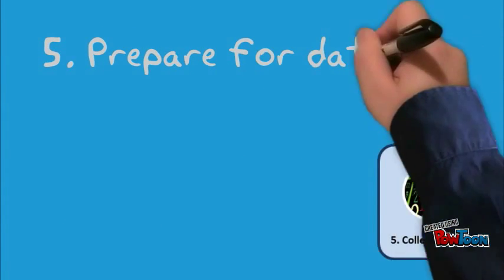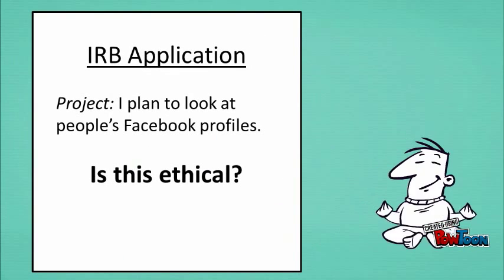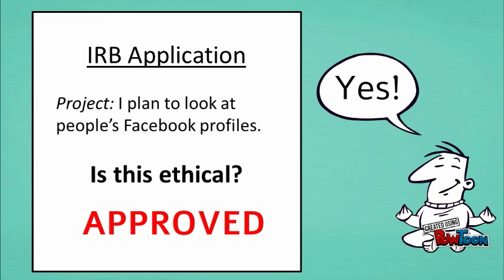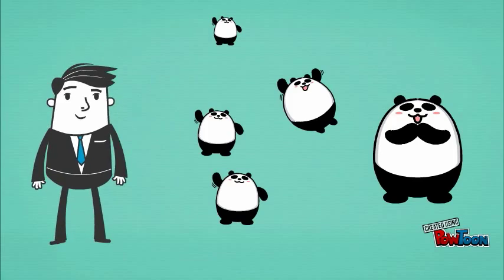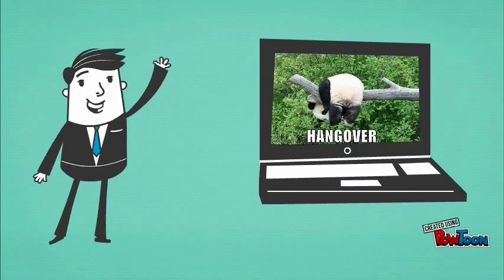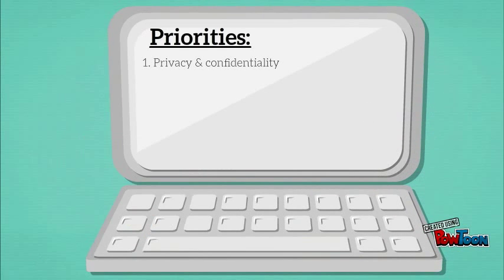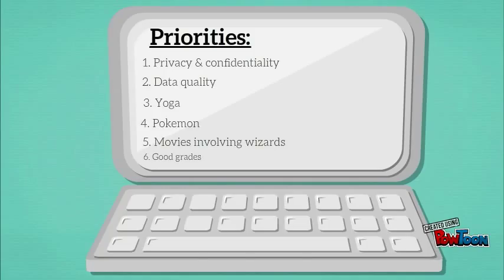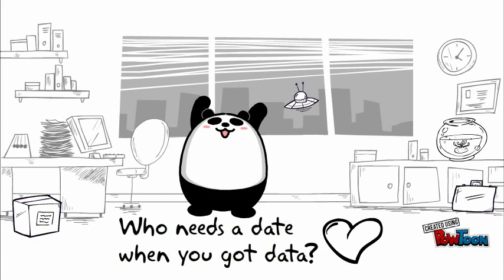Next, you'll prepare your data collection plan and actually collect the data. This is when you obtain approval from an Institutional Review Board, or an IRB. Once approved, you can actually collect the data. This is the exciting, action step where you get to recruit your participants and conduct interviews, focus groups, content analysis, or whatever data collection method you've chosen. It is important to make participant confidentiality and privacy a priority as you begin to collect your data. That was as exciting and thorough as data collection itself!